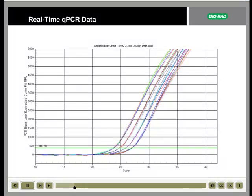In this plot, the different curves are generated by a two-fold dilution series of starting material. The most dilute samples generated the curves toward the right.